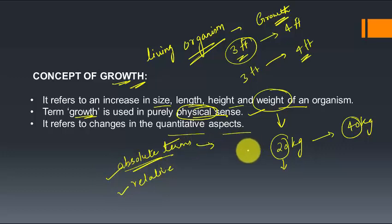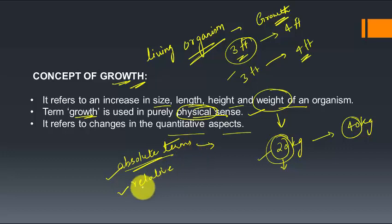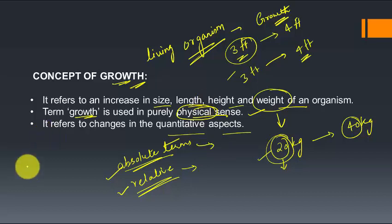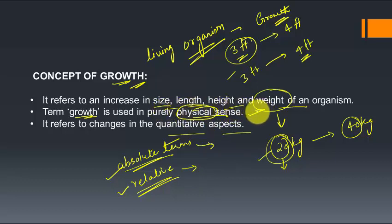There are two kinds of values: absolute and relative. Absolute values can be assigned a direct numerical figure, such as weight or height. Relative values are used for aspects that cannot be measured directly — for example, emotional maturity. We can only compare whether a person is more or less emotionally mature than before. Qualities like personality, emotional maturity, and good behavior are relative, whereas size, length, height, and weight are quantitative.